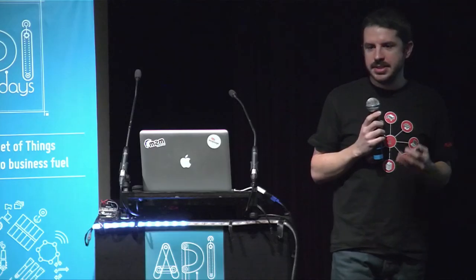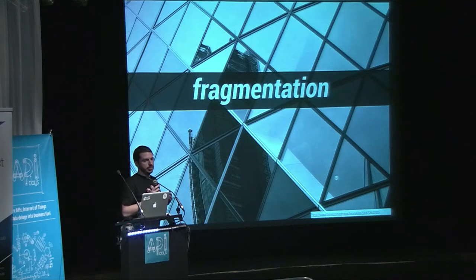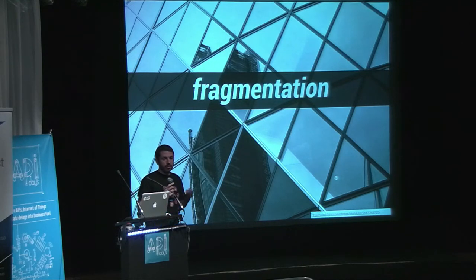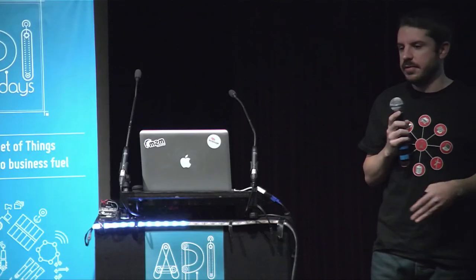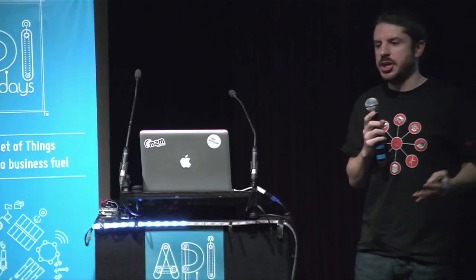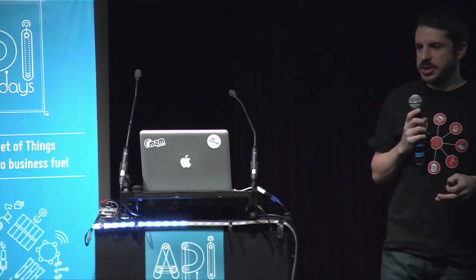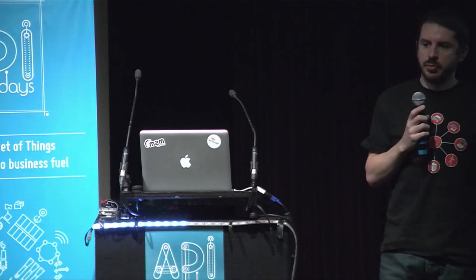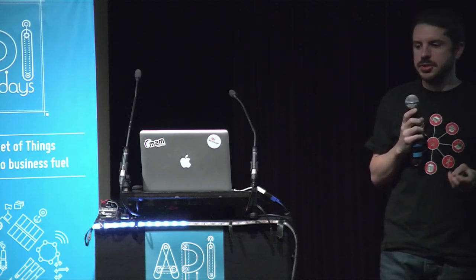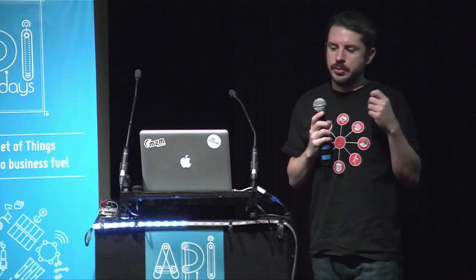The problem is that it's not really easy today to build solutions. Of course there are already IoT solutions — home automation for controlling your alarm system and stuff like that — but the market is really fragmented. You have lots of verticals, lots of proprietary solutions, proprietary protocols, several programming languages. This is really fragmented.